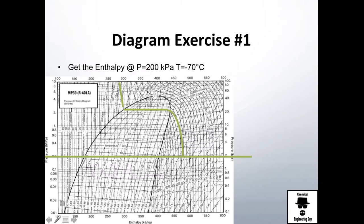Now it's time to find the isotherm of minus 70 Celsius, which is right here — you can see 60 Celsius, 70 Celsius. You may check it at several points along the line. I recommend this line because you're going to intersect it with the pressure line. Whatever line you choose, just follow it.